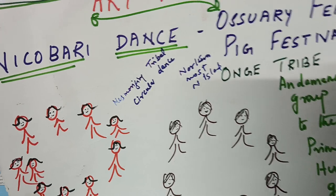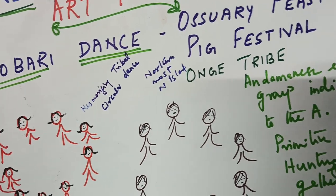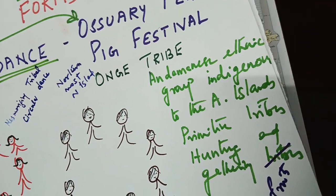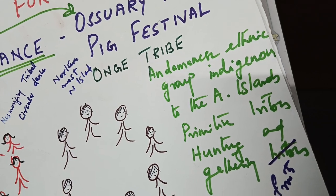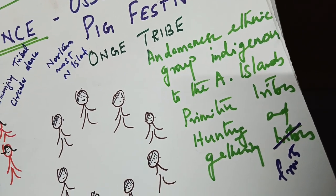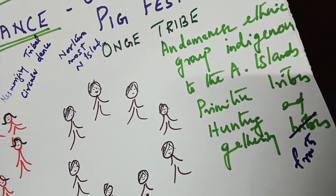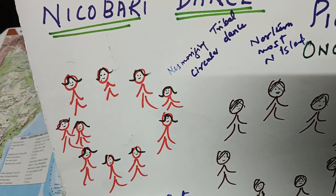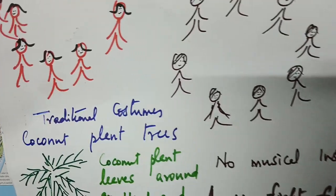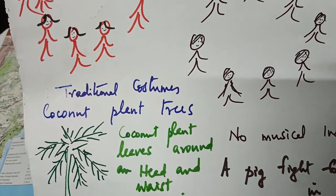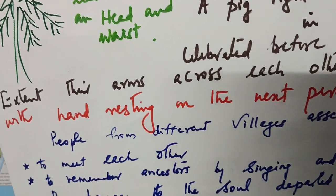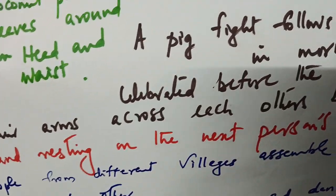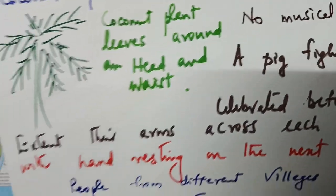The Nikobari dance is a mesmerizing tribal circular dance. It is done by the Ong tribe, which is an Andamanese ethnic group, indigenous to the Andaman and Nicobar Islands — primitive tribes who are hunting and gathering groups. They used to form circles and dance, extending their arms across each other's backs with hands resting on the next person's shoulder.